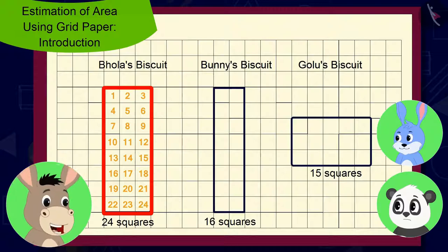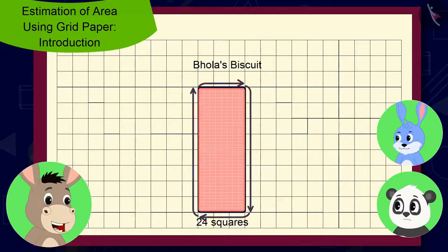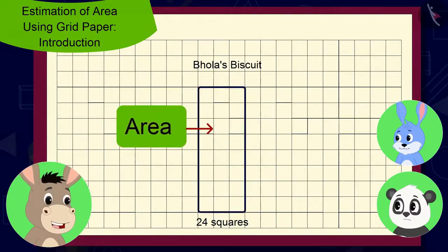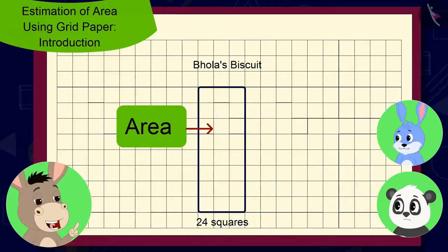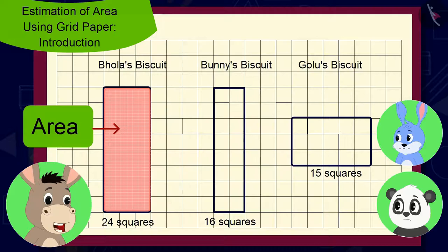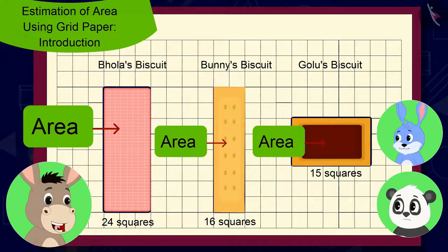Absolutely right. And do you know that the space created inside the boundary of any shape is known as the area of that shape? So we can say that the area of my biscuit is larger than the area of both your biscuits, or my biscuit is bigger than both of your biscuits. Bhoola explained to Golu and Bunni.